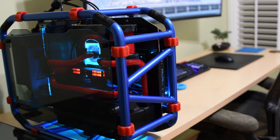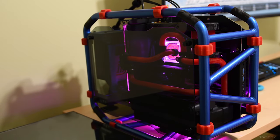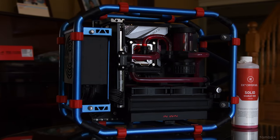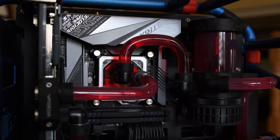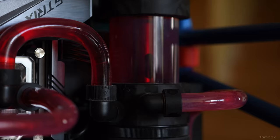This is what my EKWB solid scarlet red premix coolant first looked like. After about two months the coolant lost its color and became almost see-through. EKWB sent me a replacement but even that changed colors after about two months.